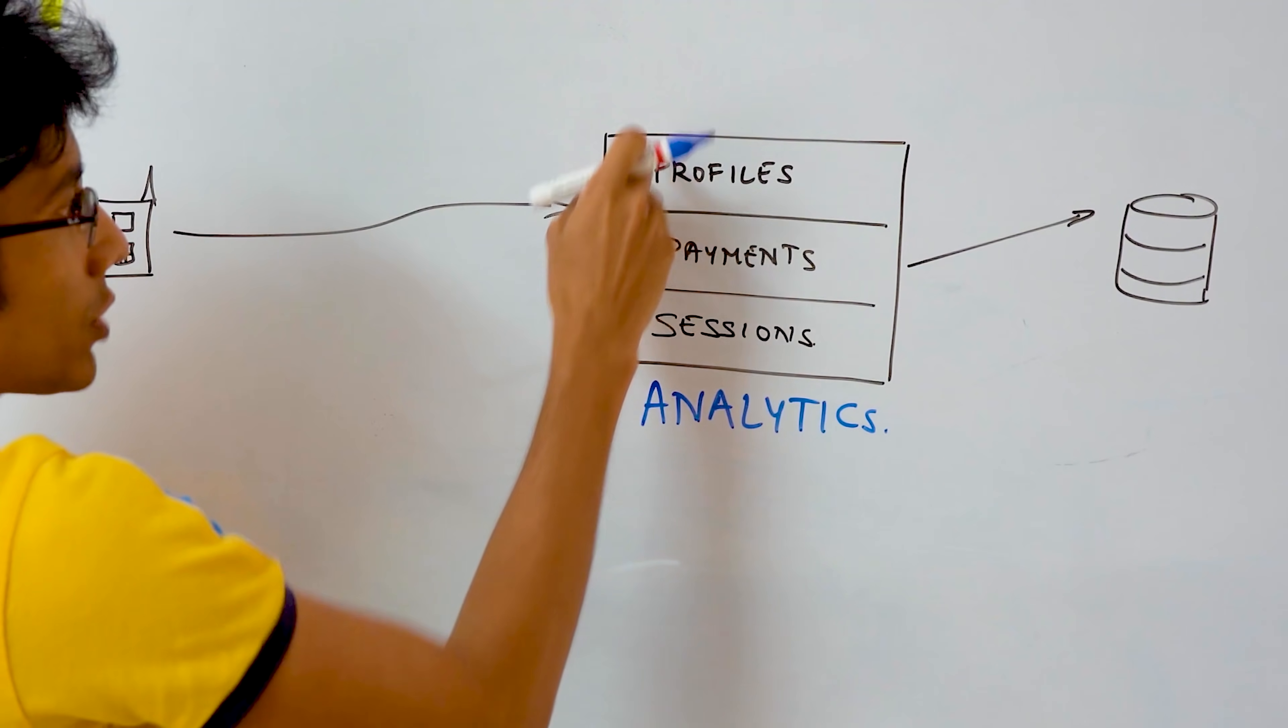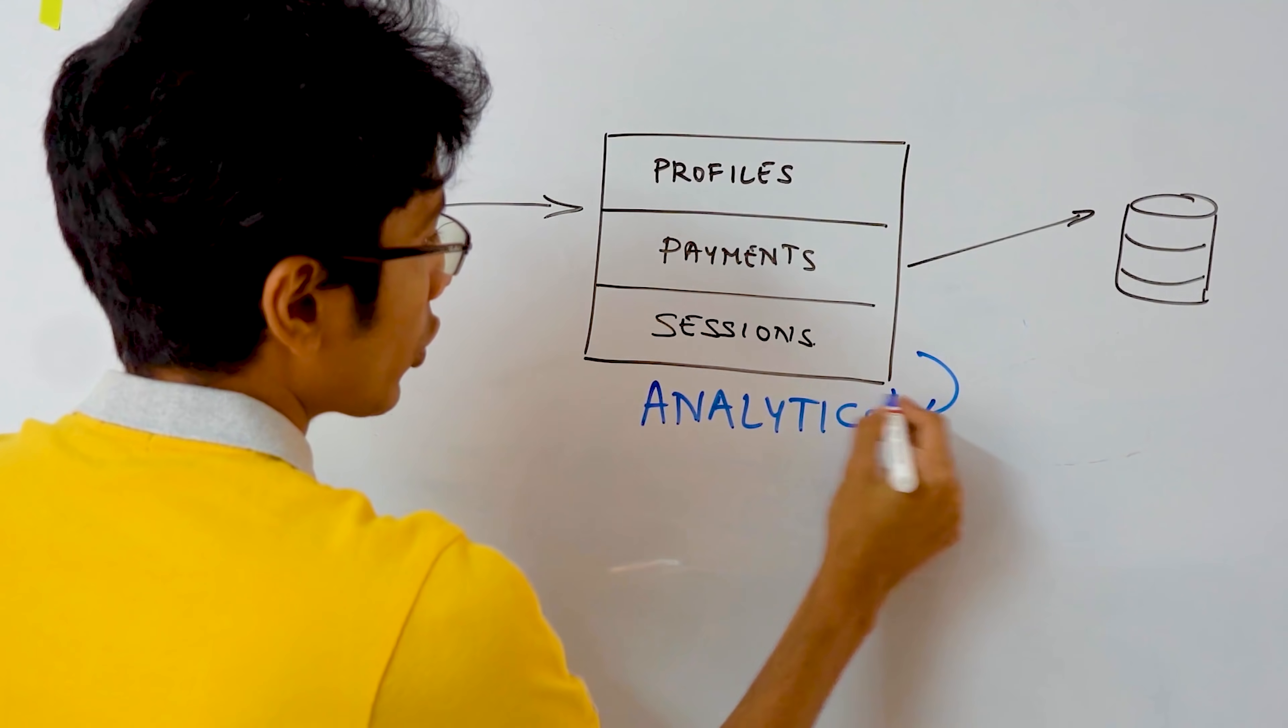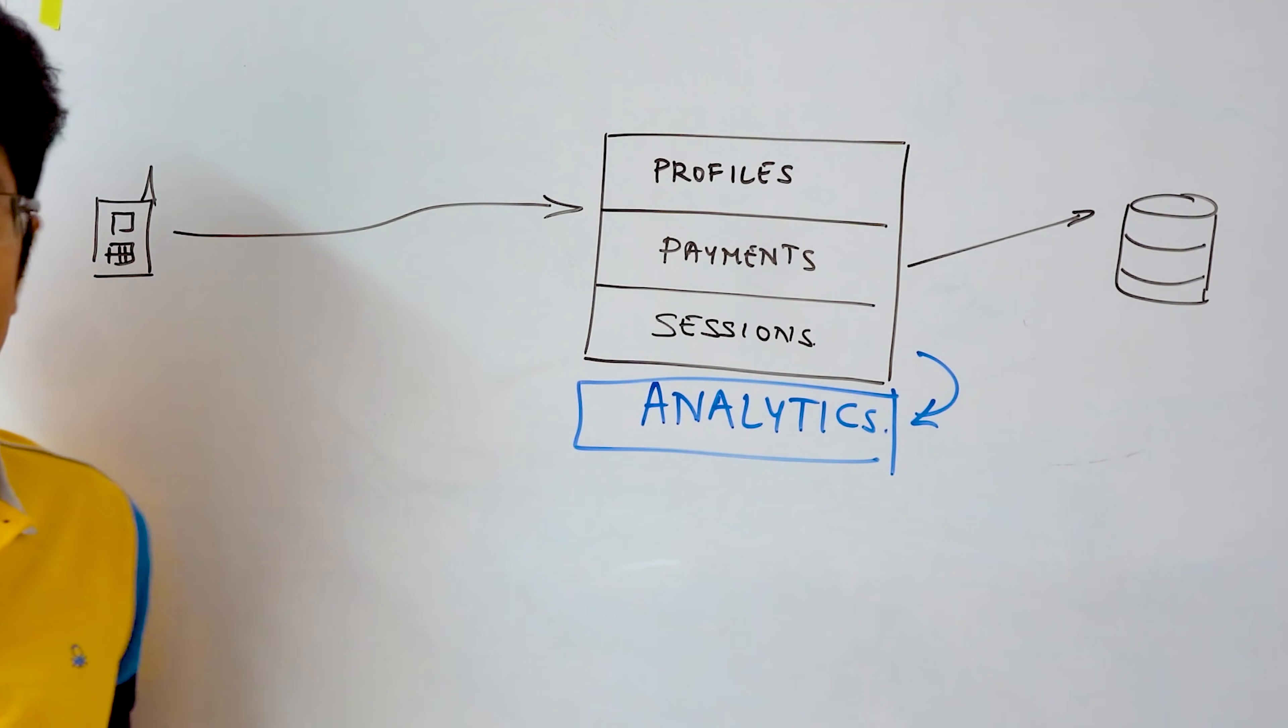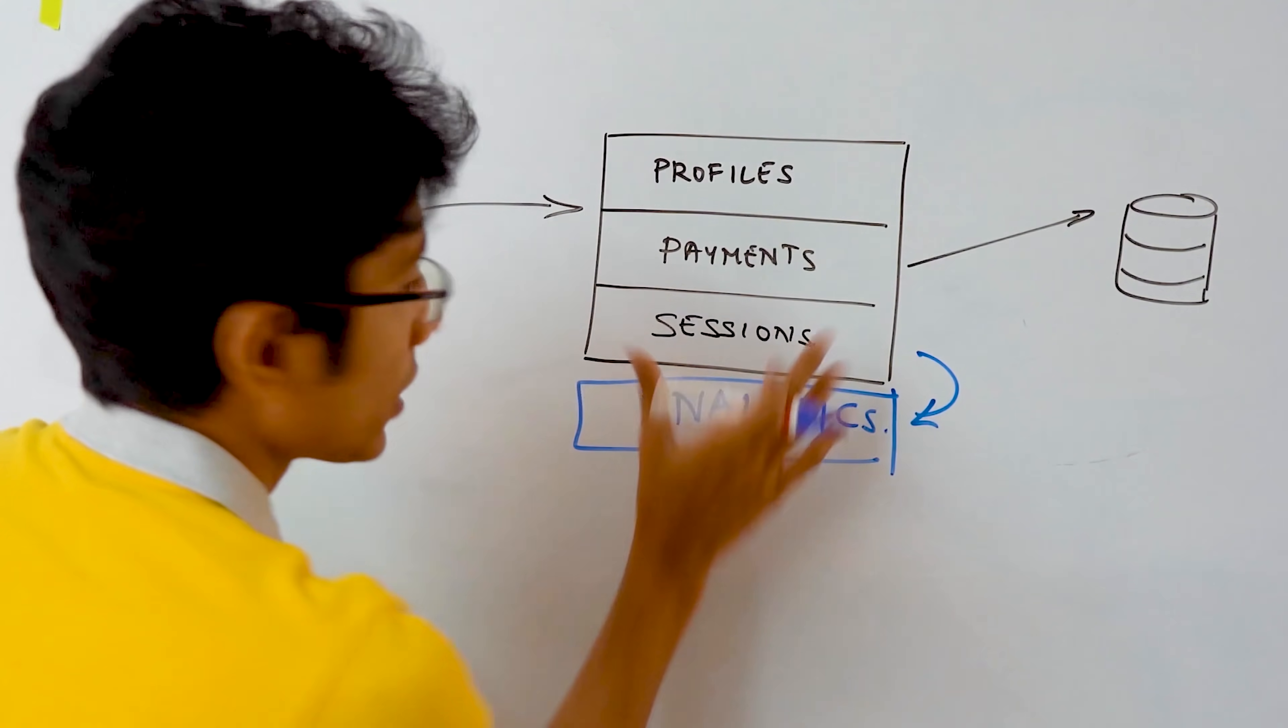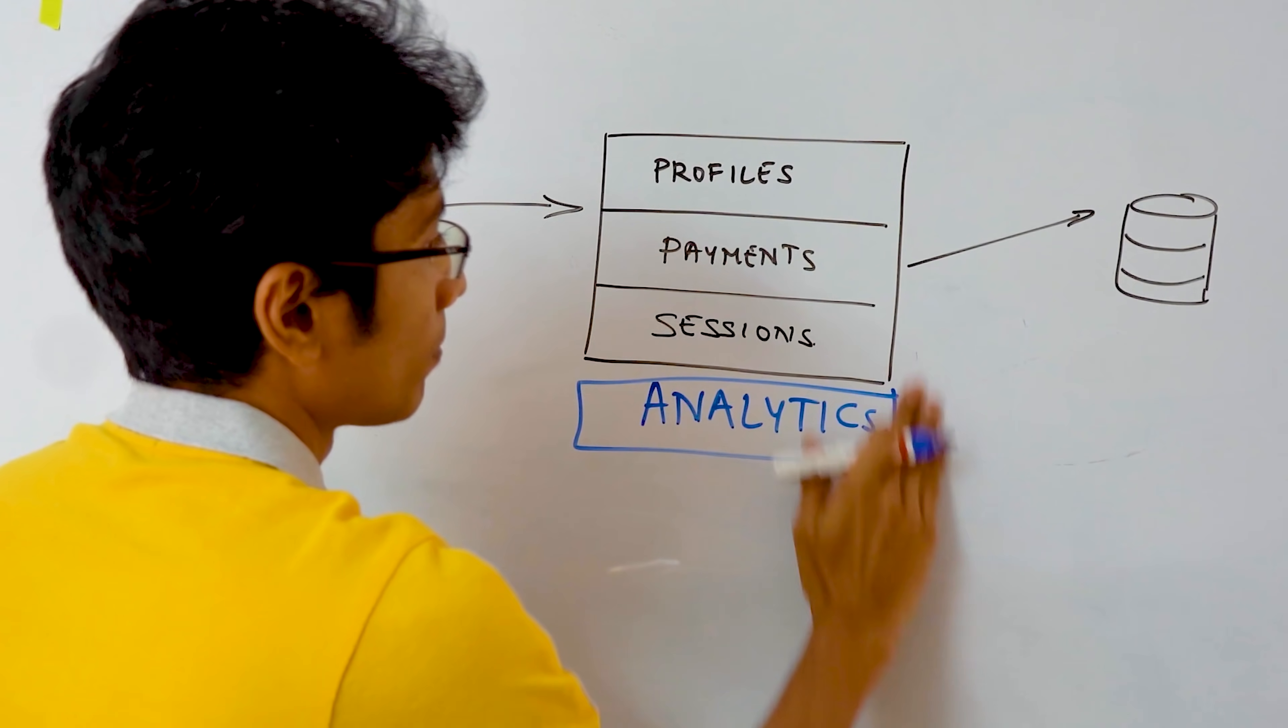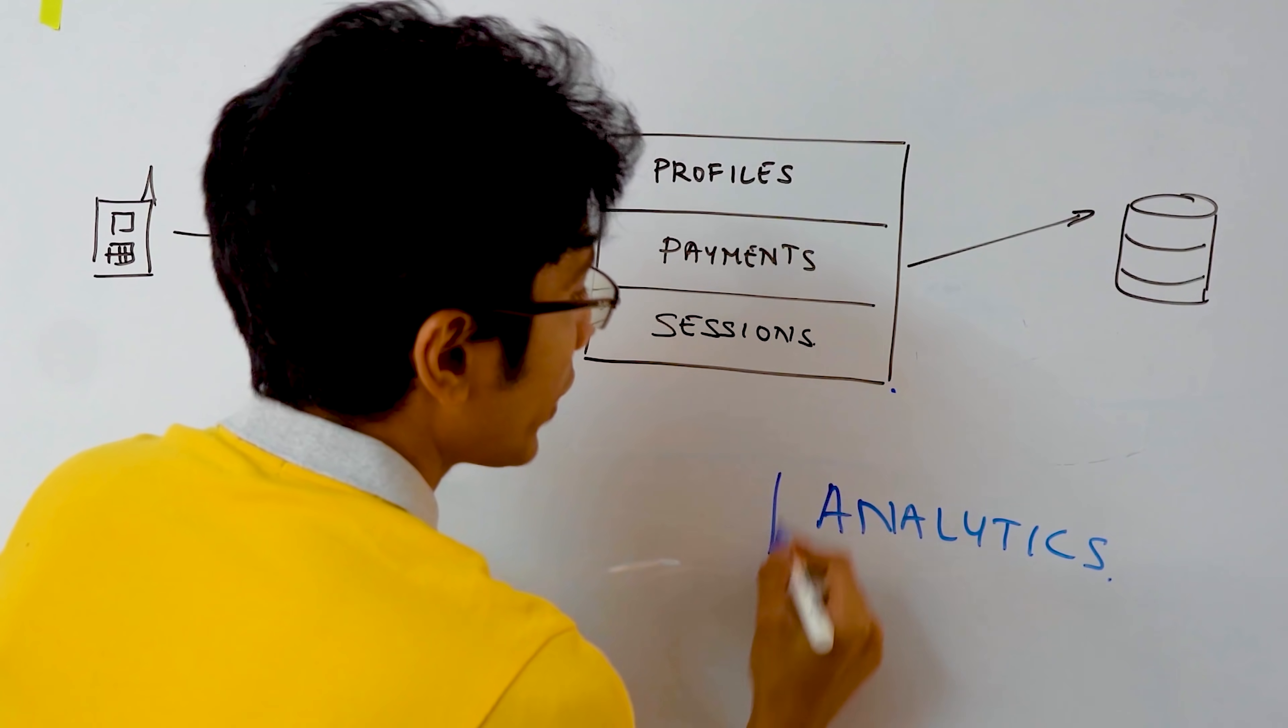So whenever any of these modules are producing an event, you need the analytics module to process that event and then give you dashboards or graphs or reports. Instead of actually putting it in the monolith architecture, we separate it out. We make this a separate service.